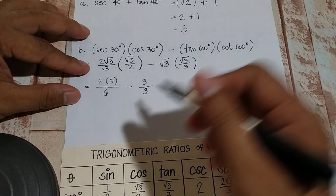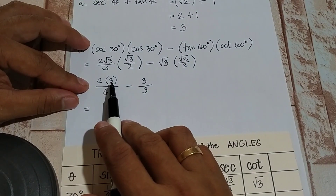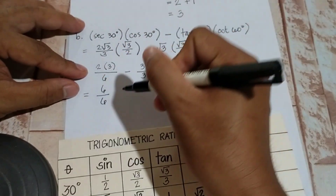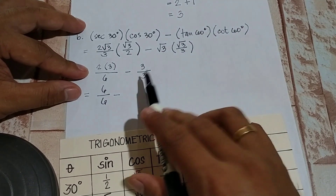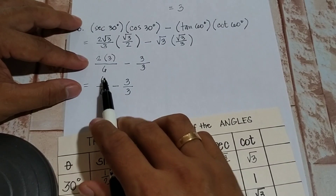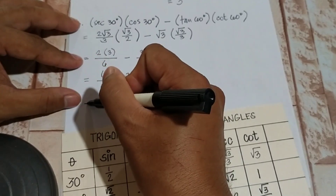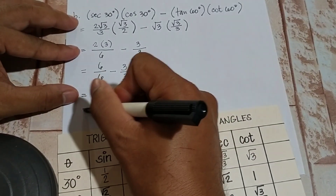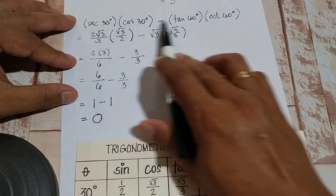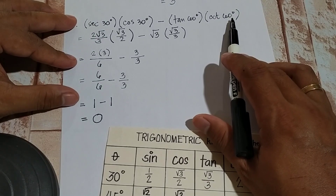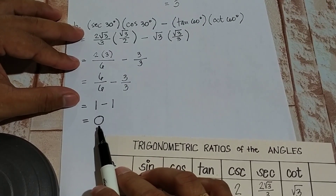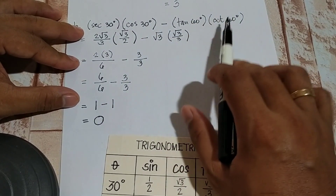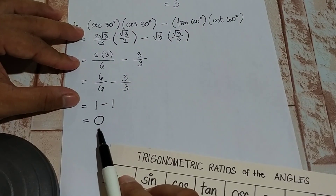So we have 6 over 6 minus 3 over 3. What is 6 divided by 6? That's 1. What is 3 divided by 3? That's 1. So what is 1 minus 1? That is equal to 0. So as you can see, it's a long process, but as we find the exact value, it's just 0. So secant 30 times cosine 30 minus tangent 60 times cotangent 60 is just equal to 0.